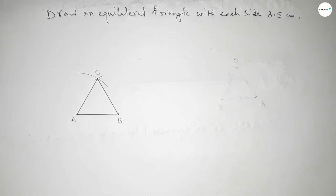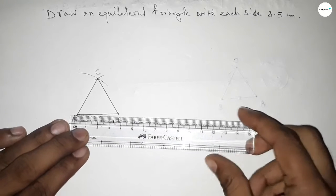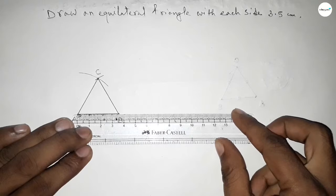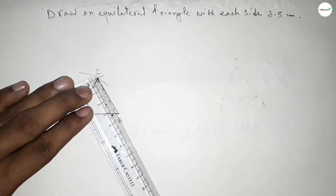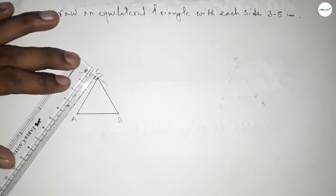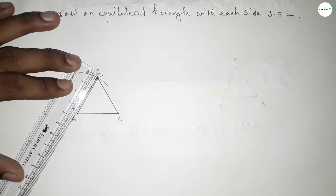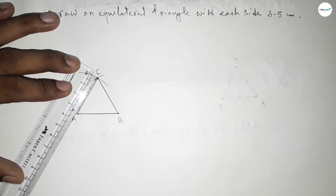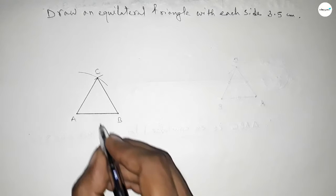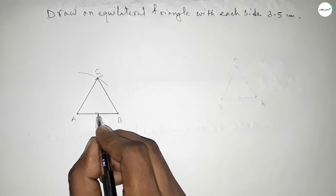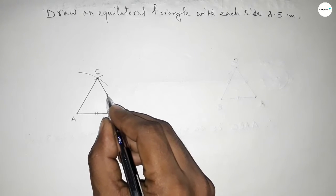Now checking all the sides. So this is 3.5 centimeter, this is also 3.5 centimeter perfectly, and this is also 3.5 centimeter. Okay, so now marking equal sign on the three sides.